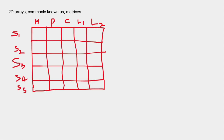Two dimensional arrays — the best example is matrices. Matrices represent rows and columns. In this example, we have a matrix where rows talk about individual student details and the columns talk about subjects like maths, physics, chemistry, L1 and L2 labs.